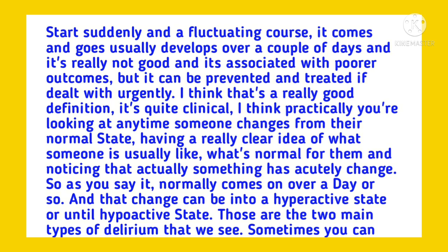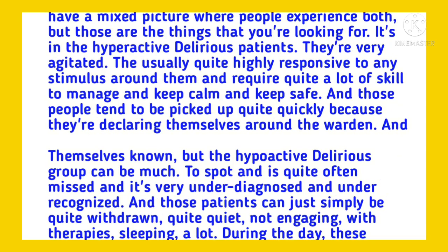Practically, you're looking at any time someone changes from their normal state — having a really clear idea of what someone is usually like, what's normal for them, and noticing that something has acutely changed. It normally comes on over a day or so, and that change can be into a hyperactive state or a hypoactive state. Those are the two main types of delirium that we see, and sometimes you can have a mixed picture where people experience both.